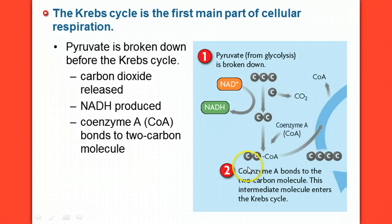And at the same time, we're able to make another energy carrying molecule of NADH. That two carbon molecule, right here in step two, binds with coenzyme A. Coenzyme A does exactly what it sounds like because it's an enzyme. It helps speed up this process. At this point, once the coenzyme A is attached, it can enter the actual cycle of the Krebs cycle.